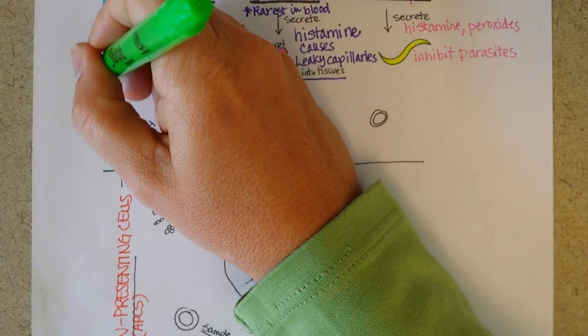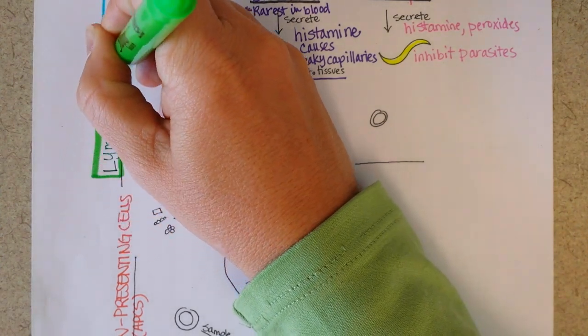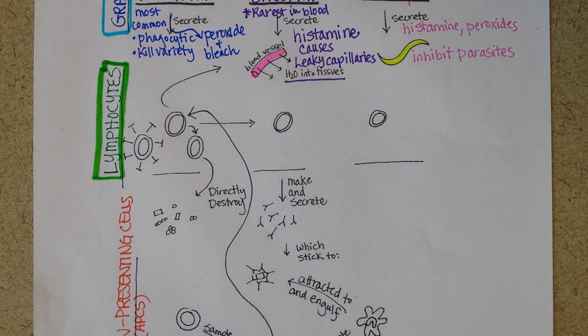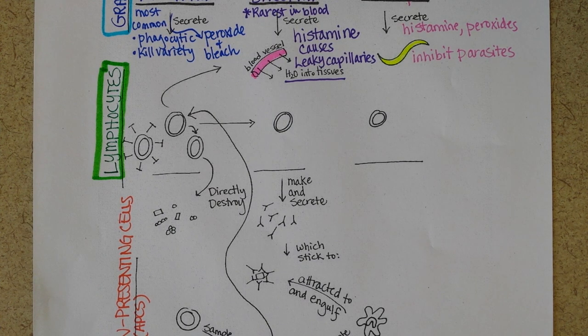Lymphocytes are white blood cells that originally form in the bone marrow, just like all the other blood cells. However, they're a little bit different in that once they've reached a certain level of maturation, they leave and go finish maturing in lymphatic tissues.